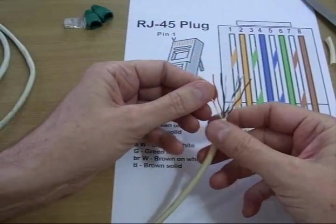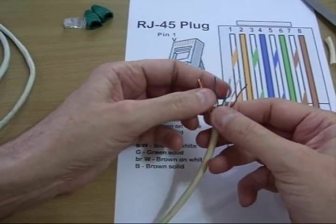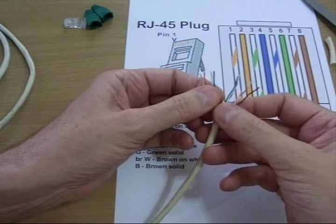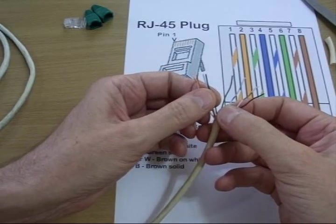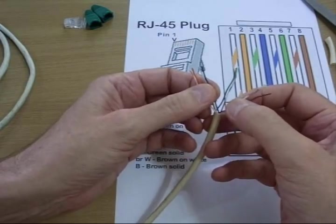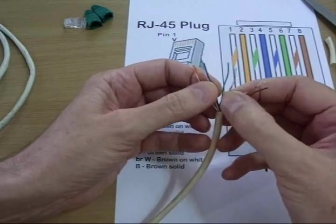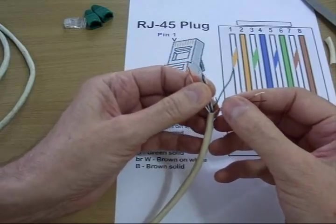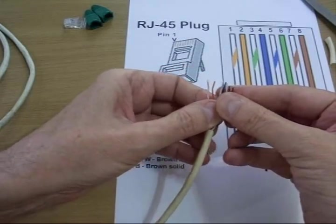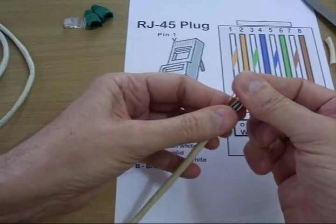Okay, so again go back and check. Orange and white, orange, green and white got away from me, green, blue. Green. Brown on white and brown. Again, got to hold these in sequence.